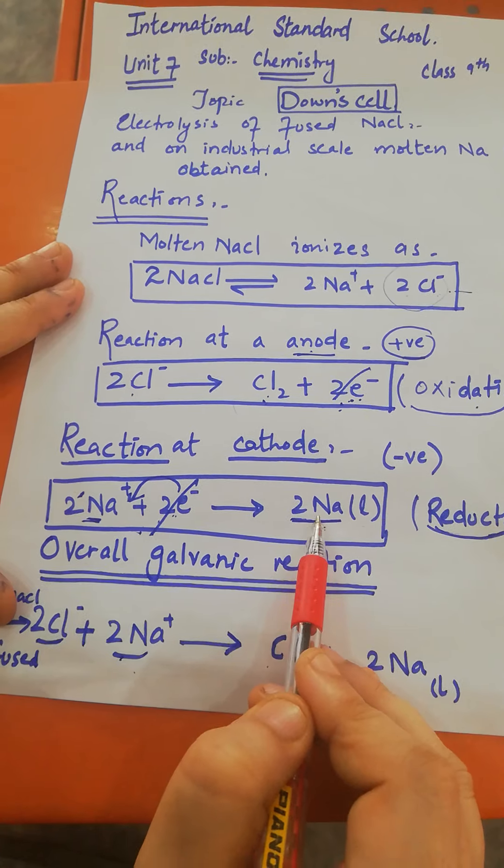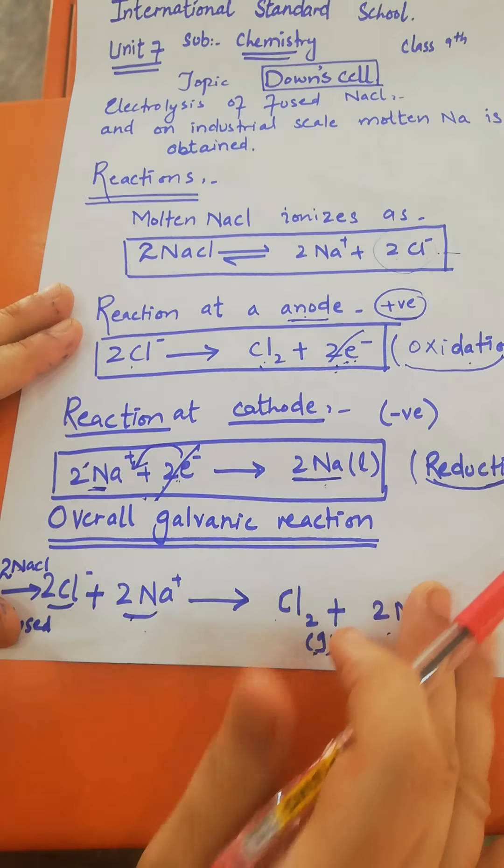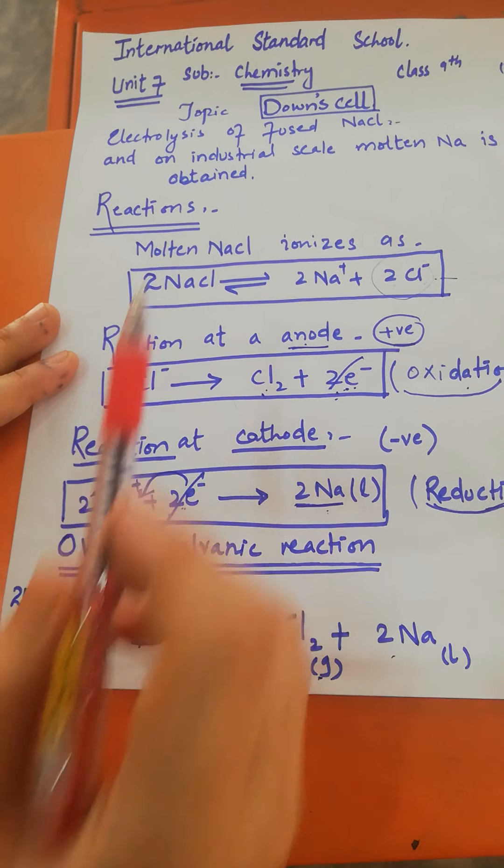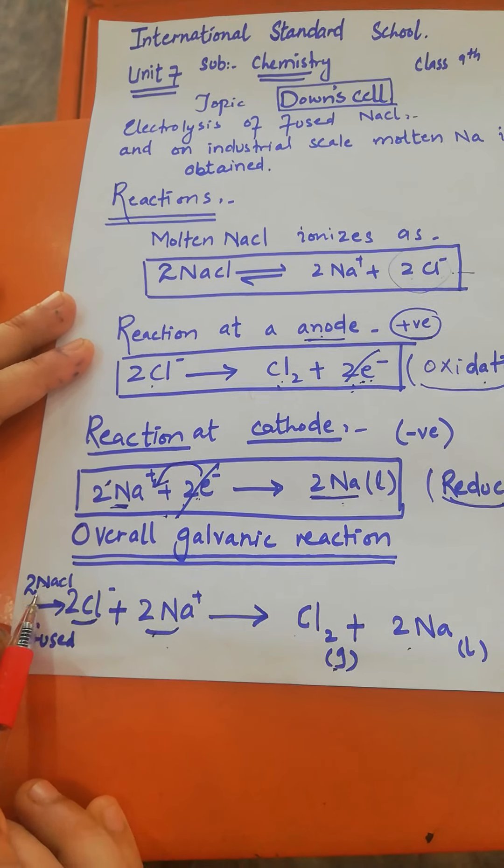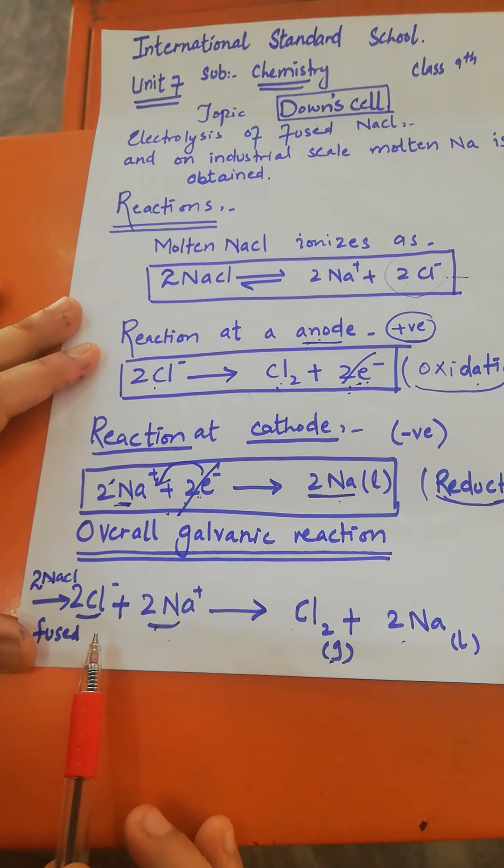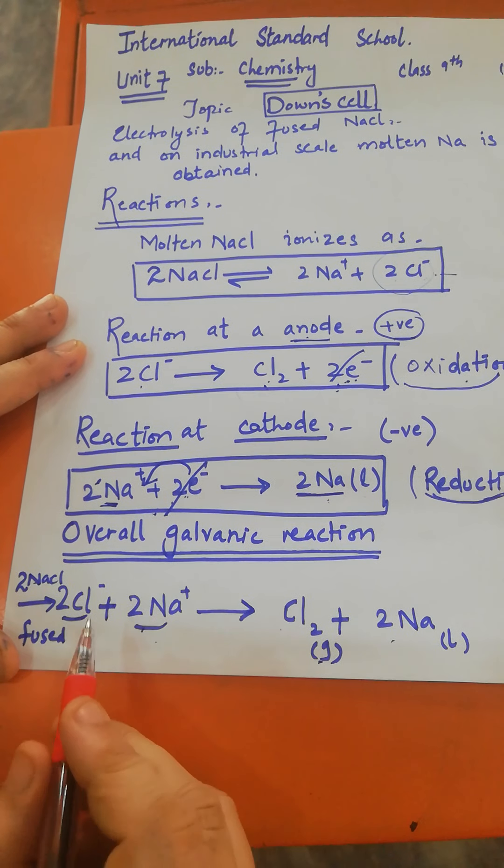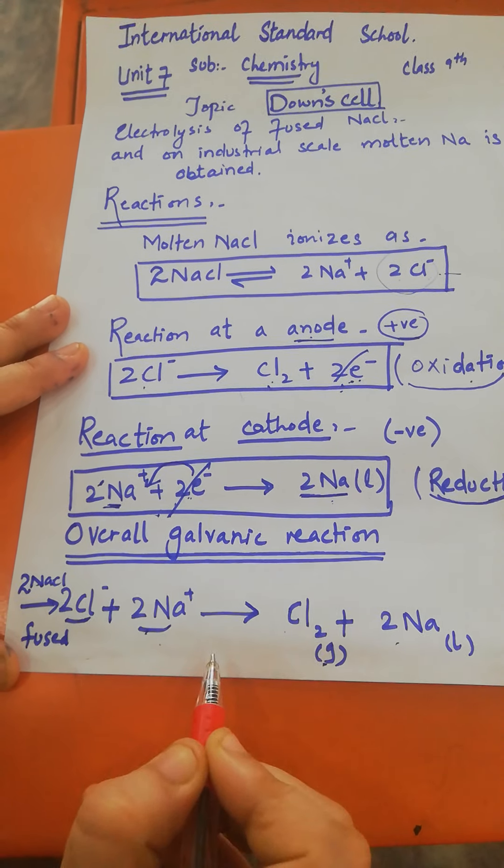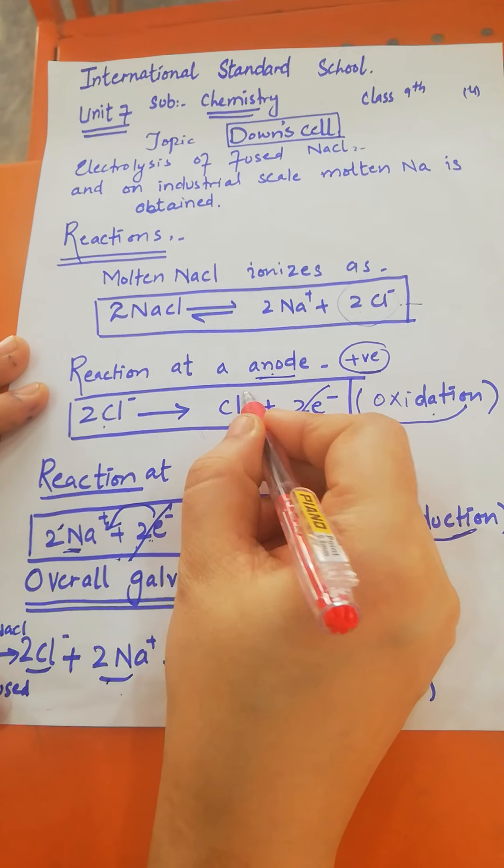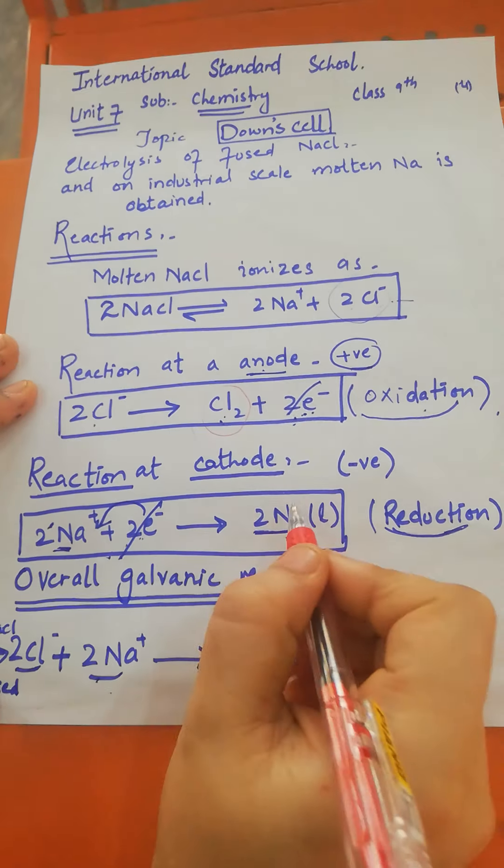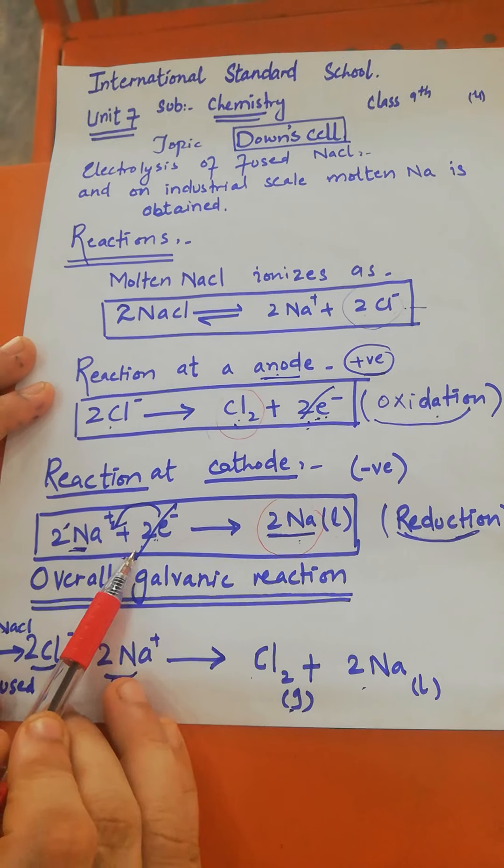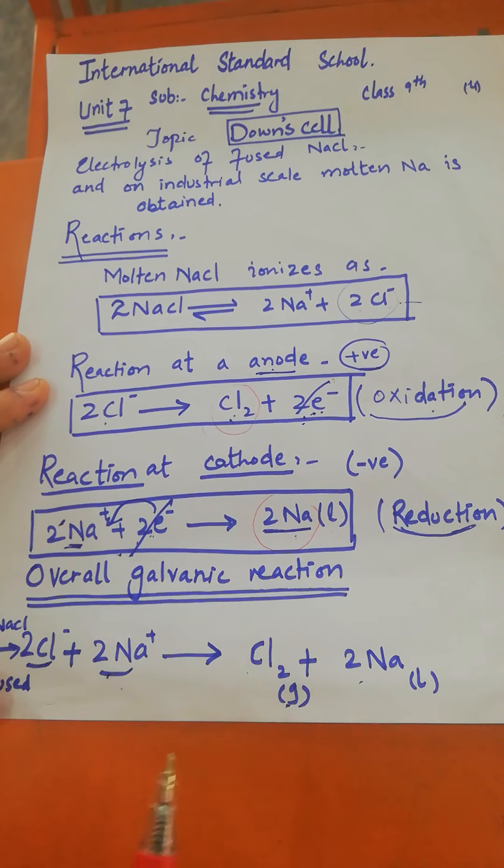Now let's see the overall reaction. We have sodium chloride in fused state in its ionic form: 2NaCl becomes 2Na+ and 2Cl-. We write this on the left side. As a result, we get chlorine gas (Cl2) and sodium metal (2Na). The electrons cancel out.